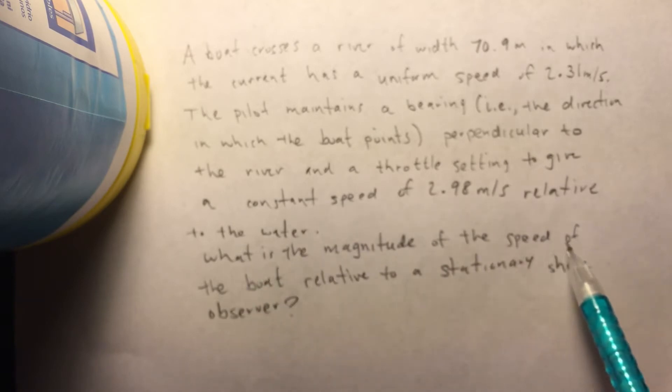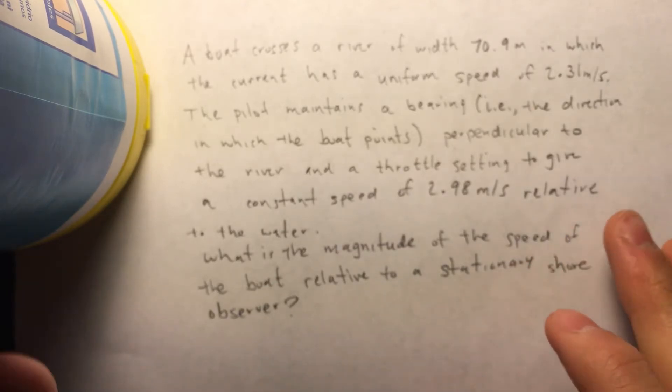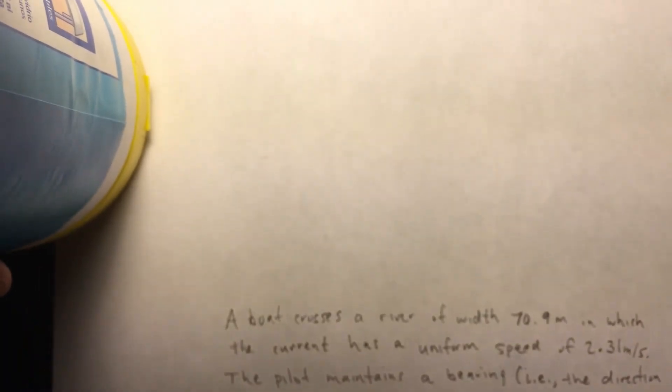What is the magnitude of the speed of the boat relative to a stationary shore observer? So, like I mentioned earlier, first off, let's draw our picture because drawing a picture in physics takes us a long way.